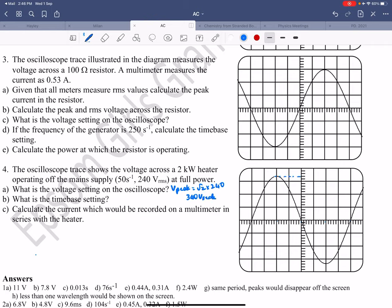So if this is 340 volts, then you go 100, 200, 300. So from here to here is 100 volts. So your voltage setting on the oscilloscope is 100 volts. So the answer to that is 100 volts.